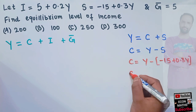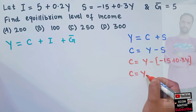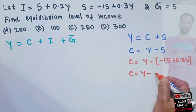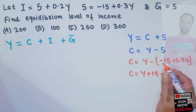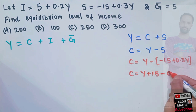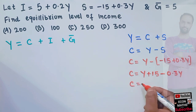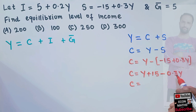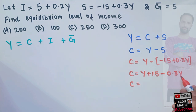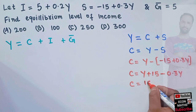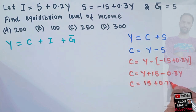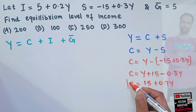So our C will be equal to Y minus into minus, which gives plus 15, and minus into plus gives minus 0.3Y. That means our consumption function will be equal to Y minus 0.3Y, which comes out to be 0.7Y. So we get 15 plus 0.7Y. This is our consumption function.